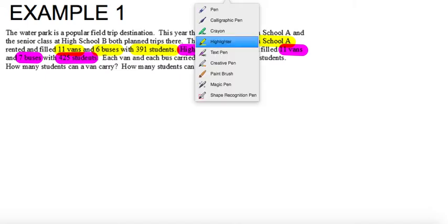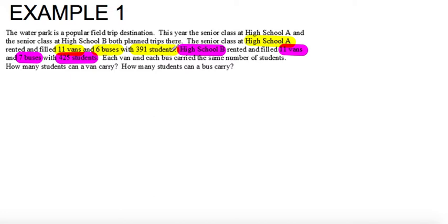Alright, so my variables here are V for vans and B for buses.